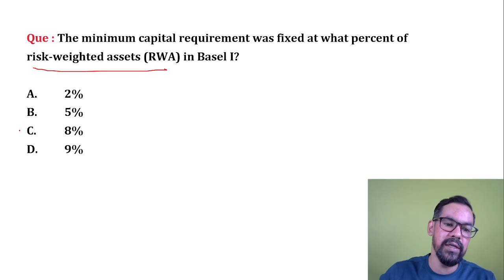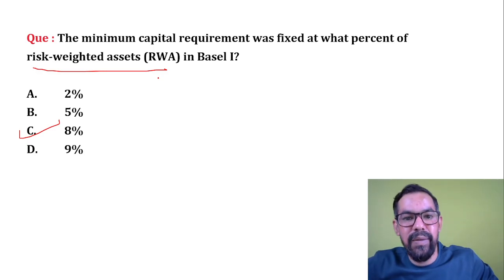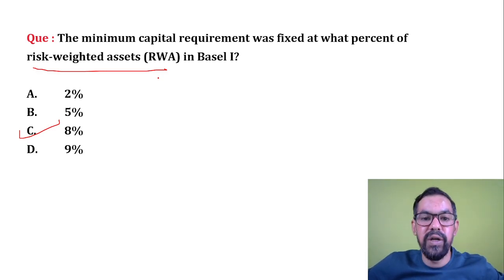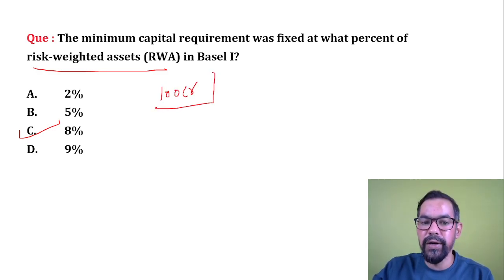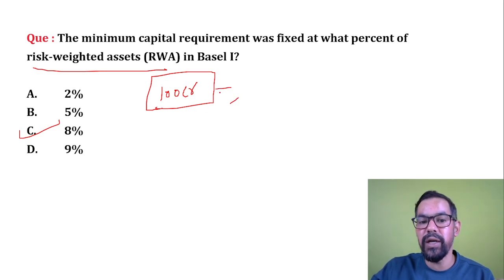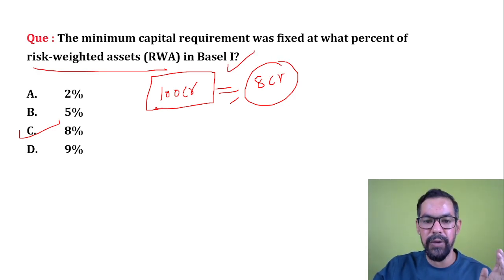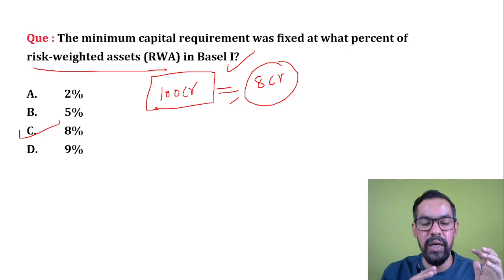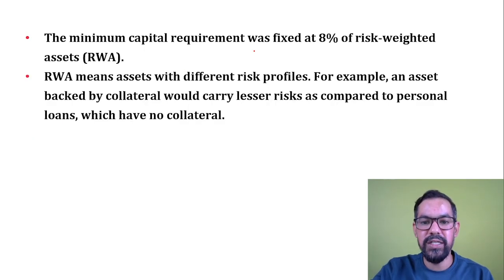Next question: the minimum capital requirement was fixed at what percent of risk-weighted assets in Basel 1? The correct answer is 8%. Risk-weighted assets are those for which the central bank issues guidelines — for example, home loans may have no risk weight, car loans are different, and personal loans are on the higher side. If a bank gives a loan in risky assets of 100 crore rupees, they must maintain a capital buffer. In Basel 1, it was 8%, so they maintain a capital buffer of 8 crore rupees. This is decided by the central bank — in India, by the Reserve Bank of India.